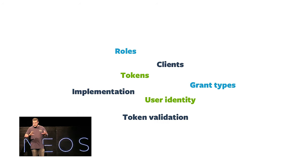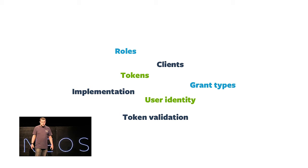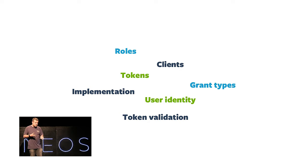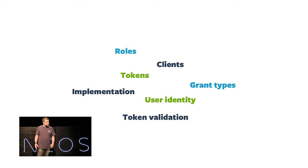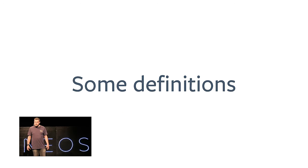So when we look into OAuth, we need to define a whole bunch of terms. In my talk today we will cover: roles, clients, tokens, token management, token validation, user identity to know who the access token was granted for, the different grant types that OAuth 2 implements, and implementation details on how you can build an OAuth 2 server on your side.